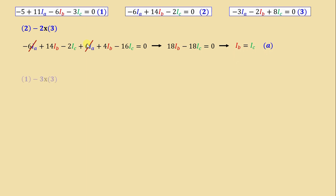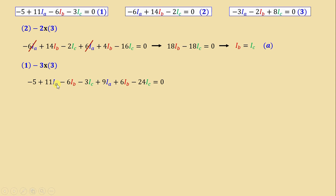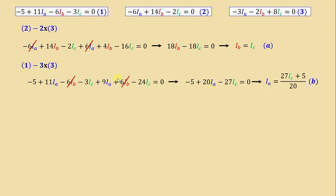Now using equation 1 minus 3 times equation 3: negative 5 plus 11·Ia minus 6·Ib minus 3·Ic plus 9·Ia plus 6·Ib minus 24·Ic equals zero. The negative 6·Ib and 6·Ib cancel, giving: negative 5 plus 20·Ia minus 27·Ic equals zero. We can write Ia in terms of Ic: Ia equals (27·Ic plus 5) over 20. We call this equation B.